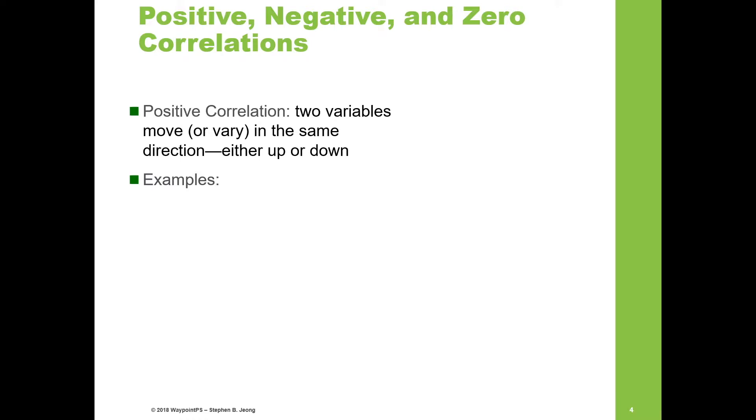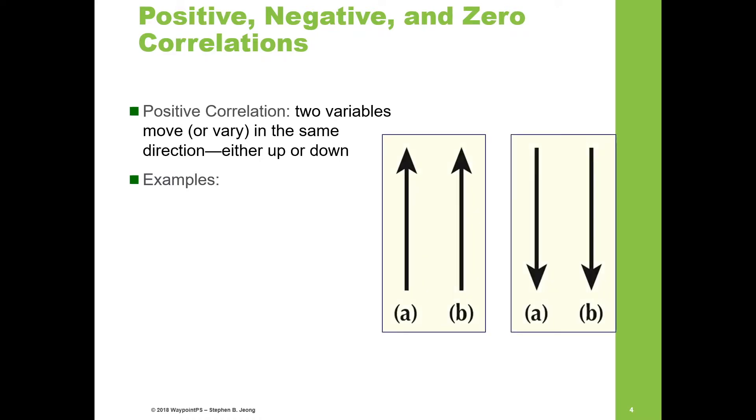Let me give you an example of positive correlation. Positive correlation is when two variables move in the same direction, either up or down. As one goes up, the other goes up. As one goes down, the other goes down. If you think about temperature, as the outside temperature increases and it gets hotter, we can expect ice cream sales to increase as well. These two variables increase simultaneously.